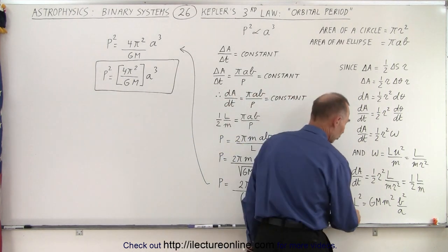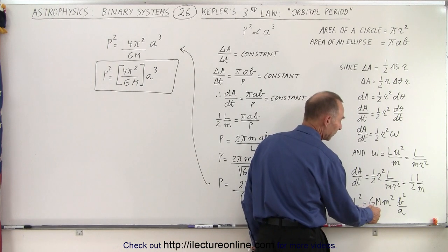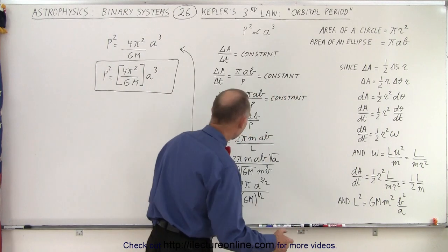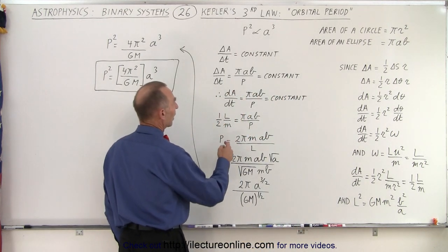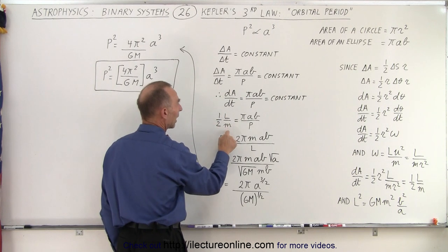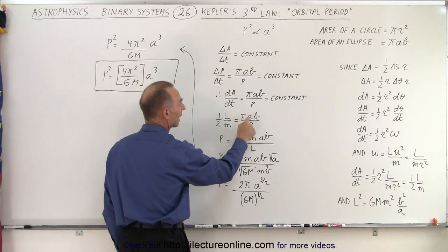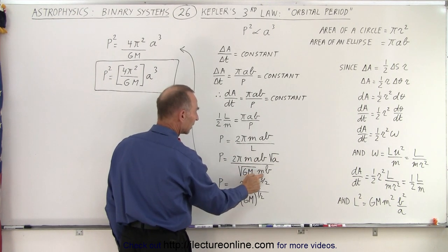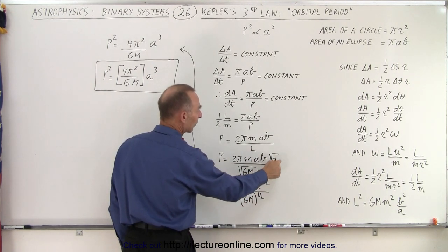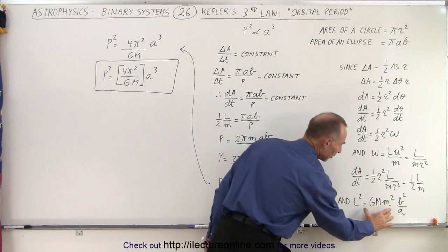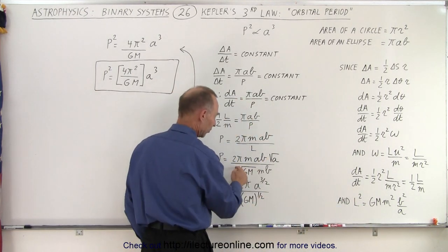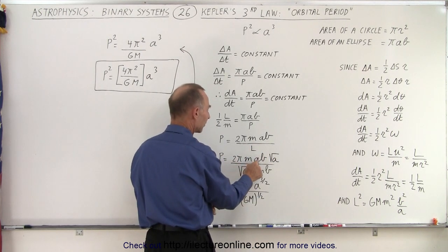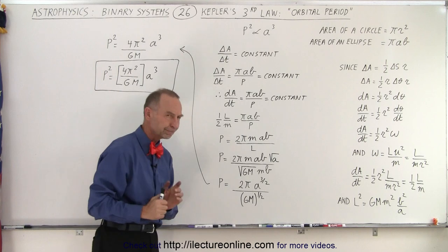And then if we realize that l squared is also equal to GM times little m squared b squared over a, which we derived in an earlier video, then we can come over here and we can write that dA/dt, which is one half l over m, is equal to pi ab over p. And l can then be written as the square root of GM times m times b divided by the square root of a. If we take the square root of both sides, you can see that that would equal this portion right here. So this right here is equal to the l. We still have 2 pi m times ab in the numerator.